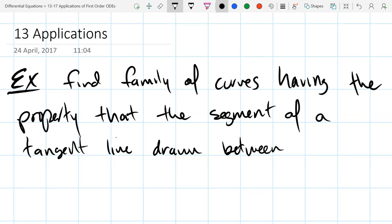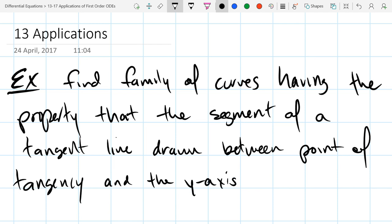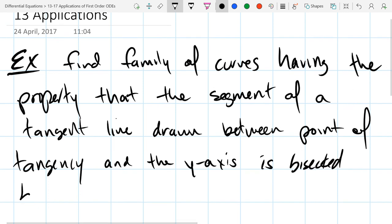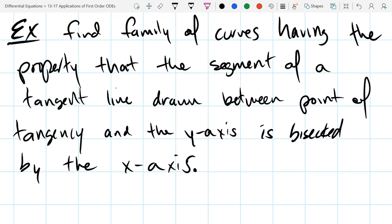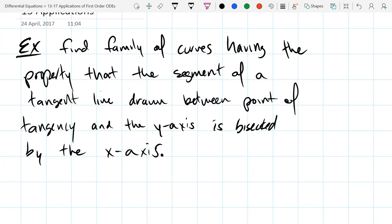We're looking for a family of curves having the property that the segment of a tangent line drawn between the point of tangency and the y-axis is bisected by the x-axis. We don't get very much information on what the curves are supposed to look like. So let's do our best to draw out some examples that would work and some examples that wouldn't work, and then maybe we can piece together what differential relationship is going on here.